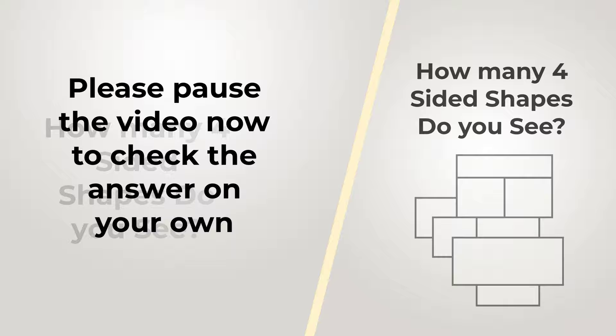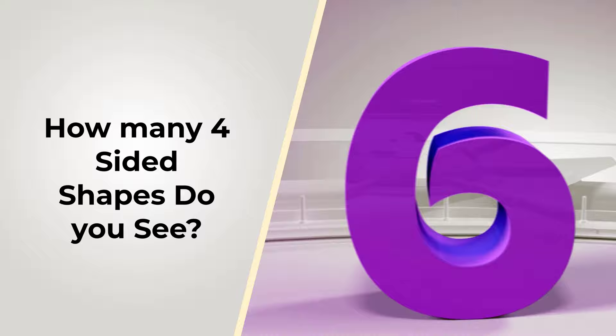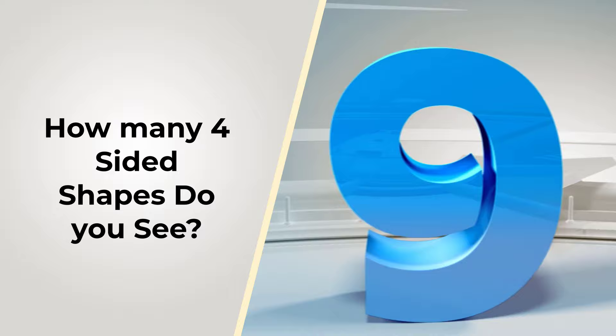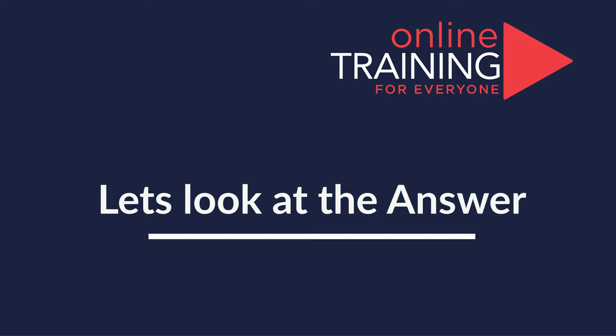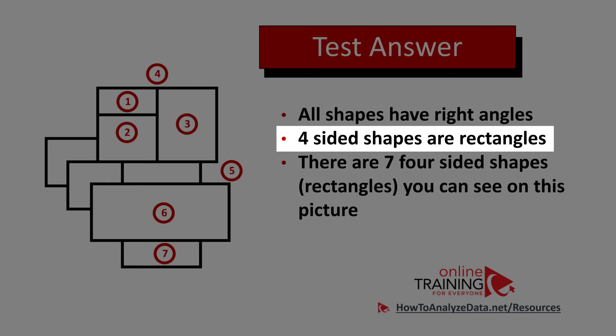Did you come up with the answer? Let me give you a tip. Keep in mind that on the real test you will not get any suggestions. There might be four-sided shapes in this picture that are not fully visible, so think carefully if they should be considered a four-sided shape. There are different four-sided shapes, but all shapes in this picture have right angles. This is the reason all four-sided shapes here are rectangles.